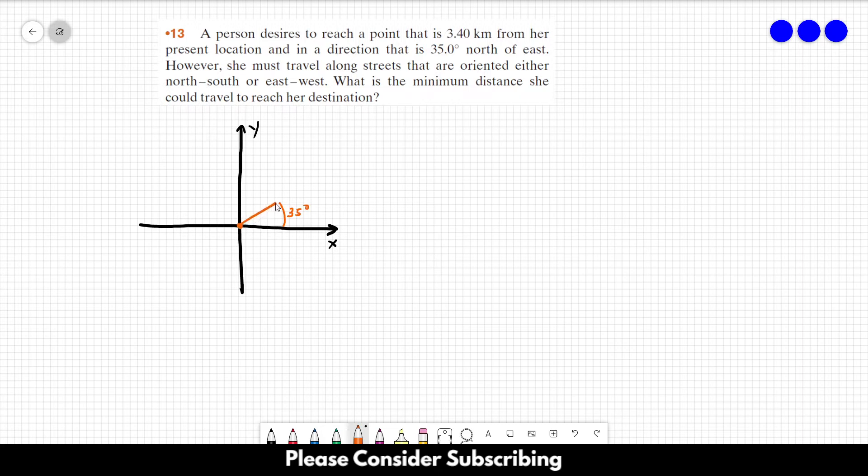So, the movement could be this one. And this distance over here is 3.4 km. However, the person cannot go in a straight line because it is inside a city.